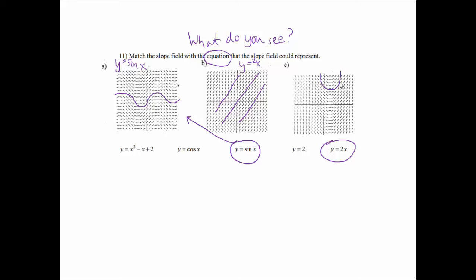And then this one, what do I see? I see some parabolas. And I know the equation of the parabola would be that one right there. So this one would be y equals x squared minus x plus 2.